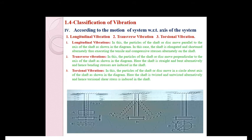The fourth category of classifying vibration is according to the motion of the system with respect to the axis of the system. Here we can observe three different figures. In the first figure, a mass and spring system shows the mass moving up and down. In the second figure, a shaft with a disc performs motion approximately perpendicular to the axis of the shaft. In the third figure, the disc rotates about the shaft.